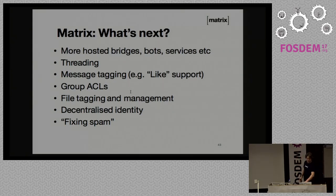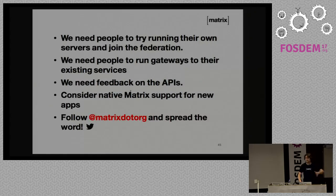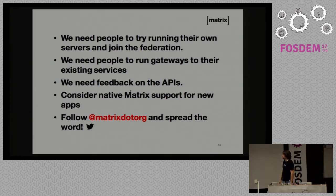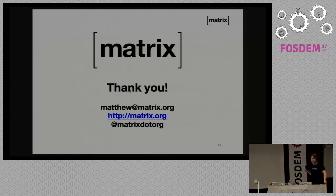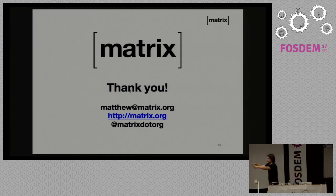What's next for Matrix overall: threading, bridges, tagging, ACLs, file management, and decentralized identity and spam — which is an increasing problem that I gave a talk about this morning. We need help from everybody here. Please run your own servers, run gateways, write gateways, tell us where it sucks. If you're writing a new app, please don't create yet another proprietary HTTP API for messaging — go and consider using Matrix or XMPP or anything rather than reinventing the wheel. Please follow us on Twitter and tell your friends and family. Thank you very much. I have 10 minutes apparently for questions.